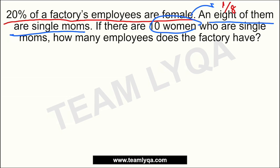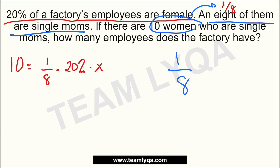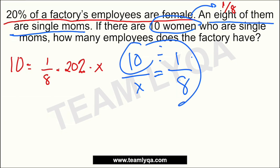Now, using our technique — backtracking — we start with the second part. If you want to use algebra: 10 equals one-eighth times 20% times x. But I prefer backtracking. Let's start with the first component: one-eighth of the female employees equals ten. To get the whole number, using ratio rotation: 10 divided by 1 is 10, times 8 is 80. So the answer here is 80 — there are 80 female employees in the factory.